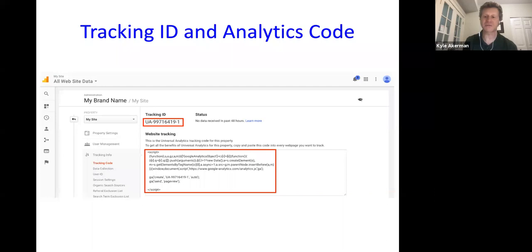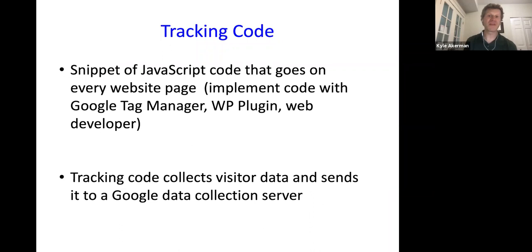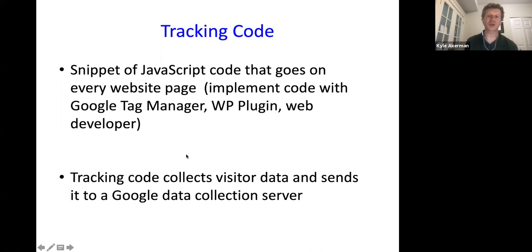You need to implement that code — it's just a snippet of JavaScript and it goes on every page of your website. There are different ways to implement it: your web developer can hard-code it, you can use a tool like Google Tag Manager, or if you have a WordPress site, there are plugins that make it really easy. This code helps measure visitor data and then sends it to Google's data servers.